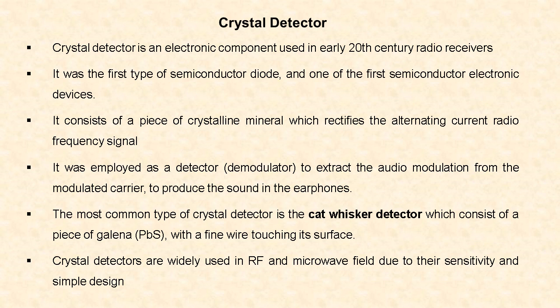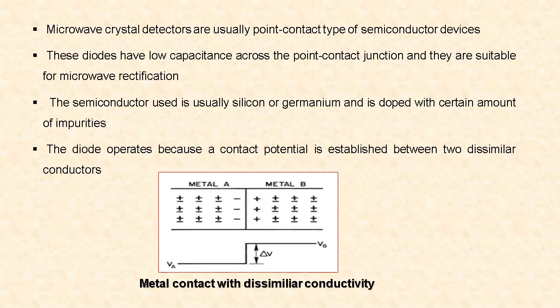Microwave crystal detectors are usually point contact type of semiconductor devices. These crystal diodes have low capacitance across the point contact junction, and they are suitable for microwave rectification. The semiconductors used in microwave crystal detectors are usually silicon or germanium.